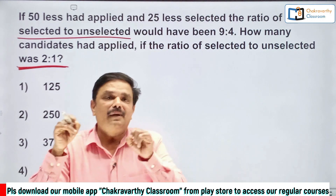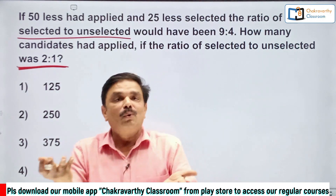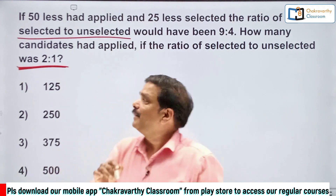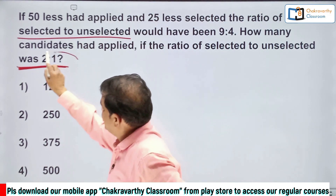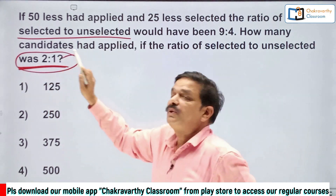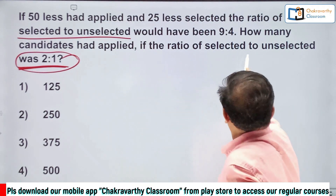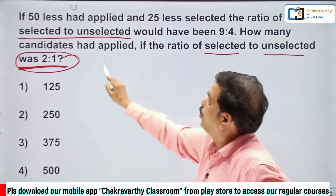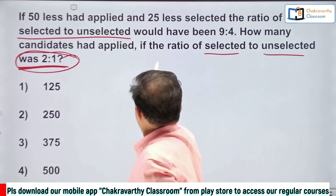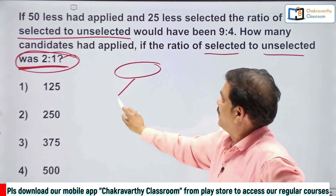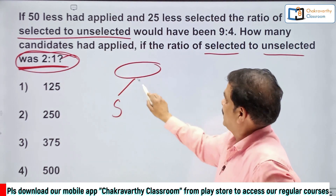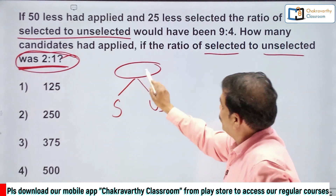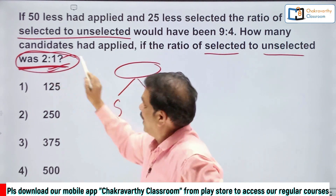There were a certain number of candidates — we don't know that number; in fact, we need to find it out. The ratio was initially 2:1. What is this ratio? Selected to unselected. Remember, this is the total number split into only two parts: one is selected, the other is unselected.